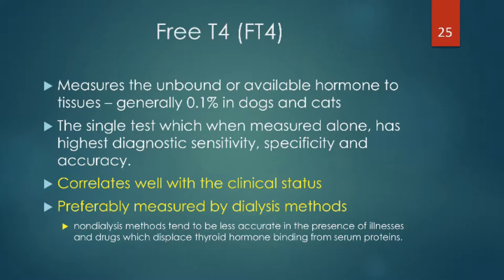Free T4 — and I'm going to talk mostly about the results for free T4 by dialysis — measures the unbound or free fraction of hormone that generally is about one part out of a thousand in circulation in dogs and cats. It turns out that this test is a single one that, if measured alone, has the highest diagnostic sensitivity, specificity, and accuracy, but we don't recommend just measuring free T4.